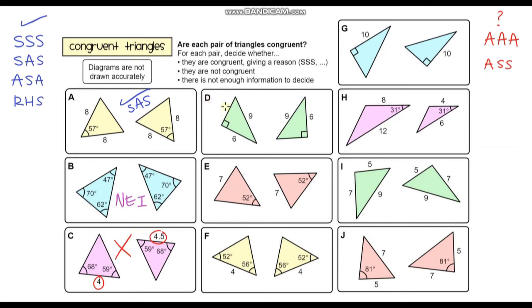For question D, we've got two right angle triangles. This side length is the hypotenuse, which is 9, and this side length is also the hypotenuse, which is also 9 — so the hypotenuses are the same. One of the other side lengths is also the same. So these two triangles are congruent through RHS: two right angle triangles, hypotenuses the same, and one other side length the same.